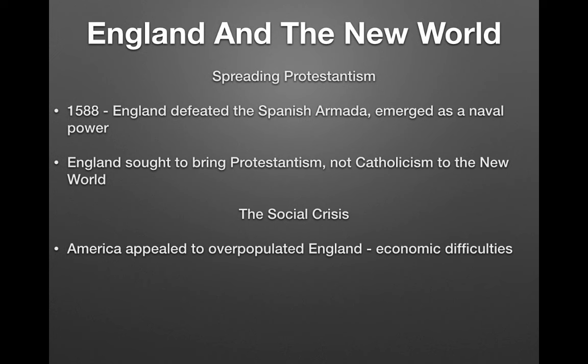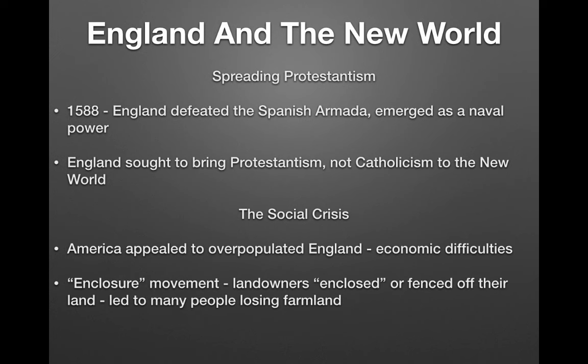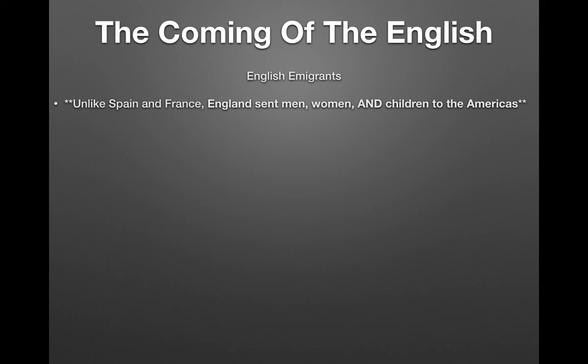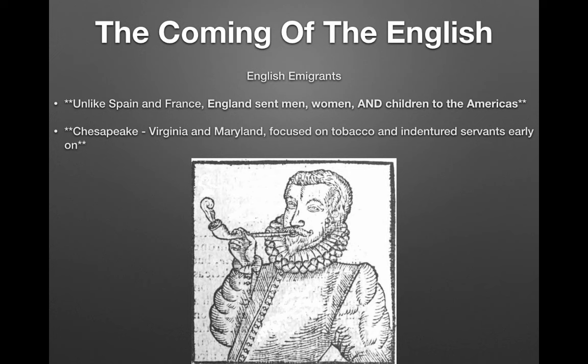In England, the enclosure movement occurred when landowners fenced off their land, leading many people to lose farmland and their source of living. Many packed up and moved to America, where the New World appealed to poorer people with the possibility of owning land. Very importantly, unlike Spain and France, England sent men, women, and children to America — whereas Spain and France predominantly sent men in smaller numbers.